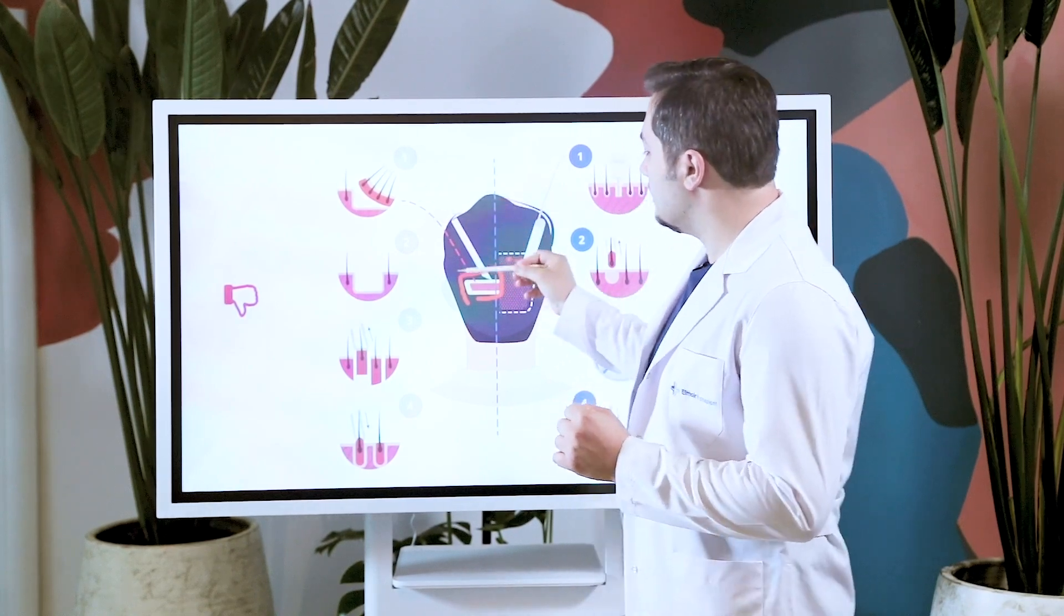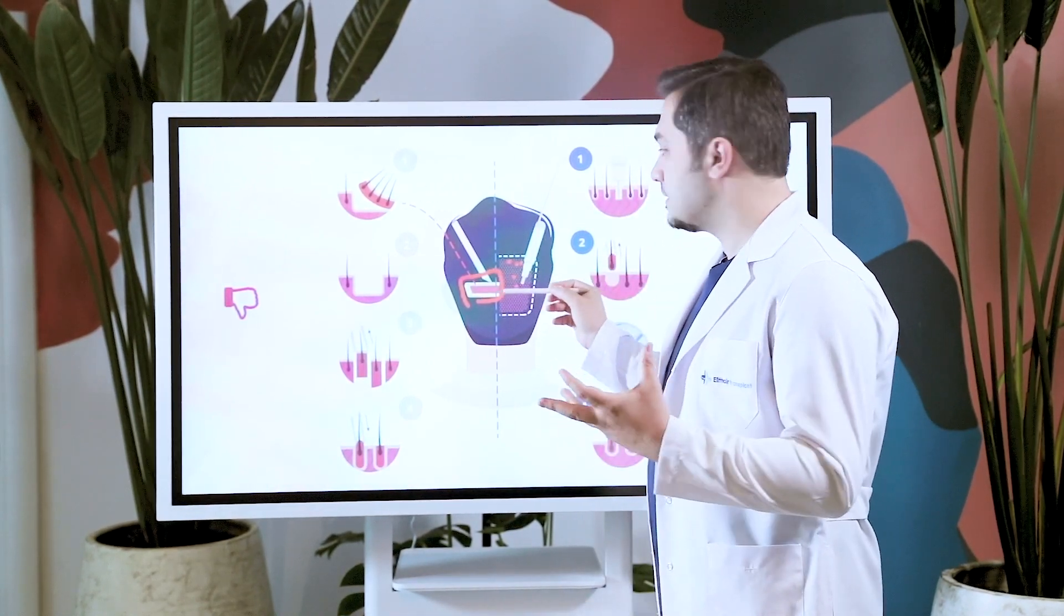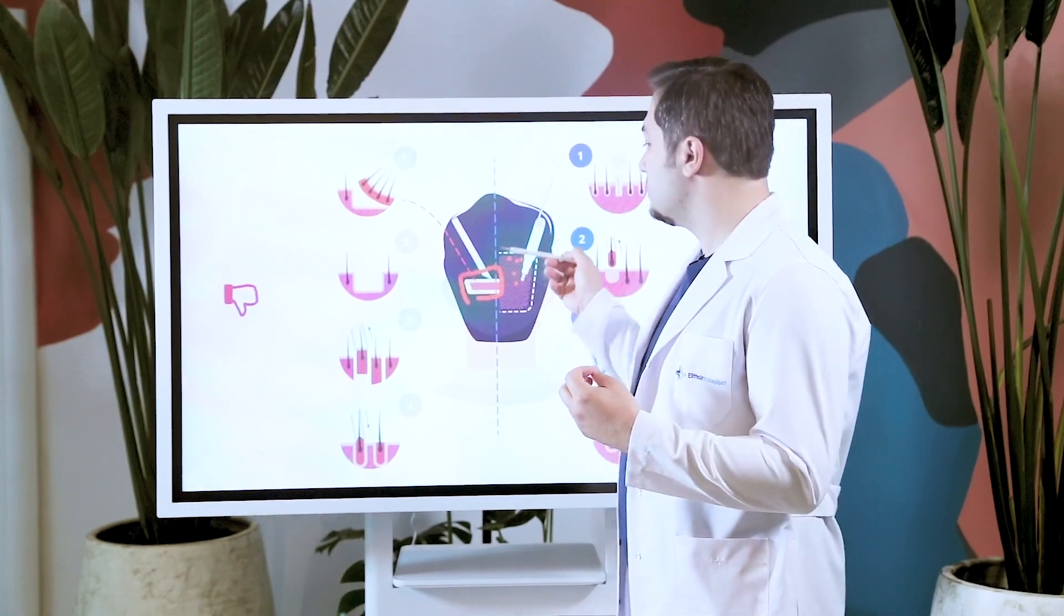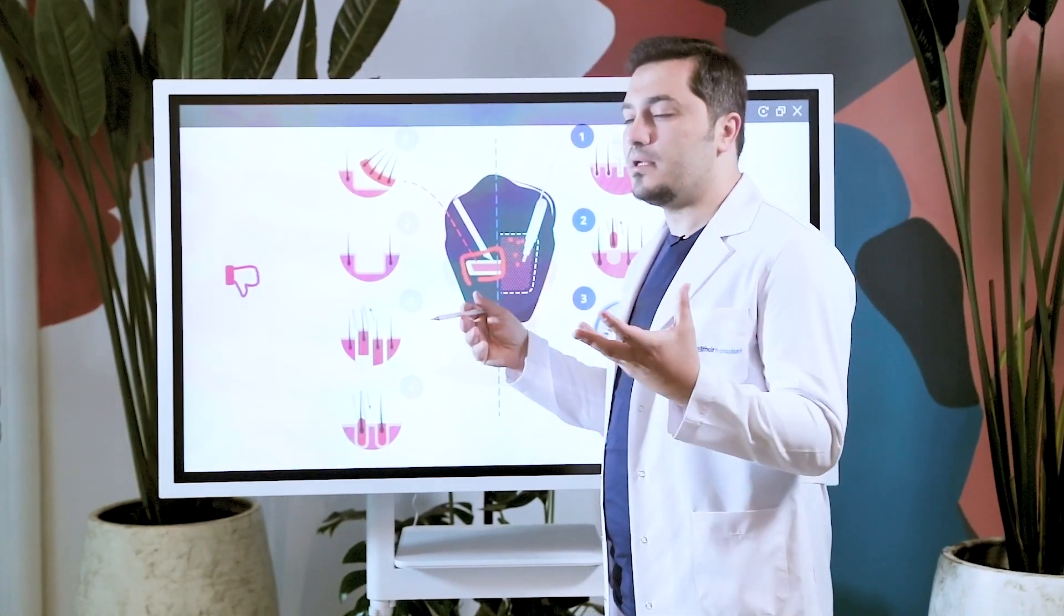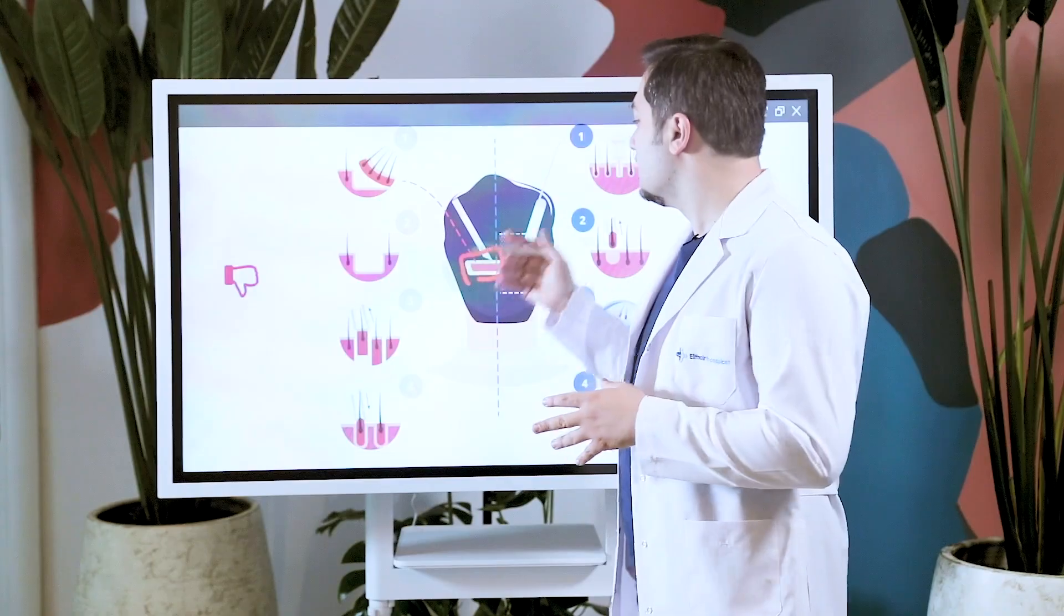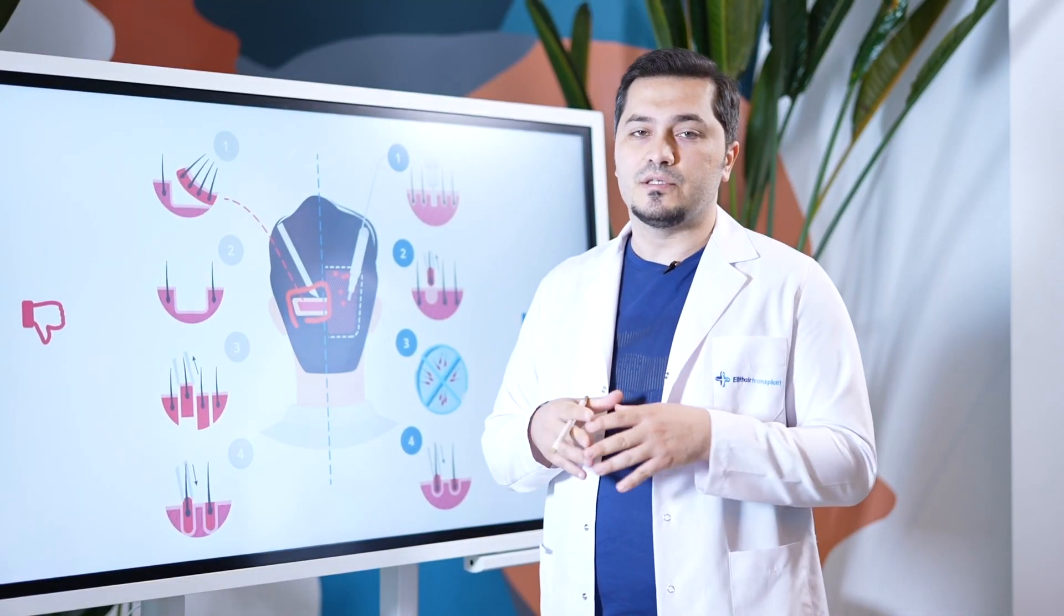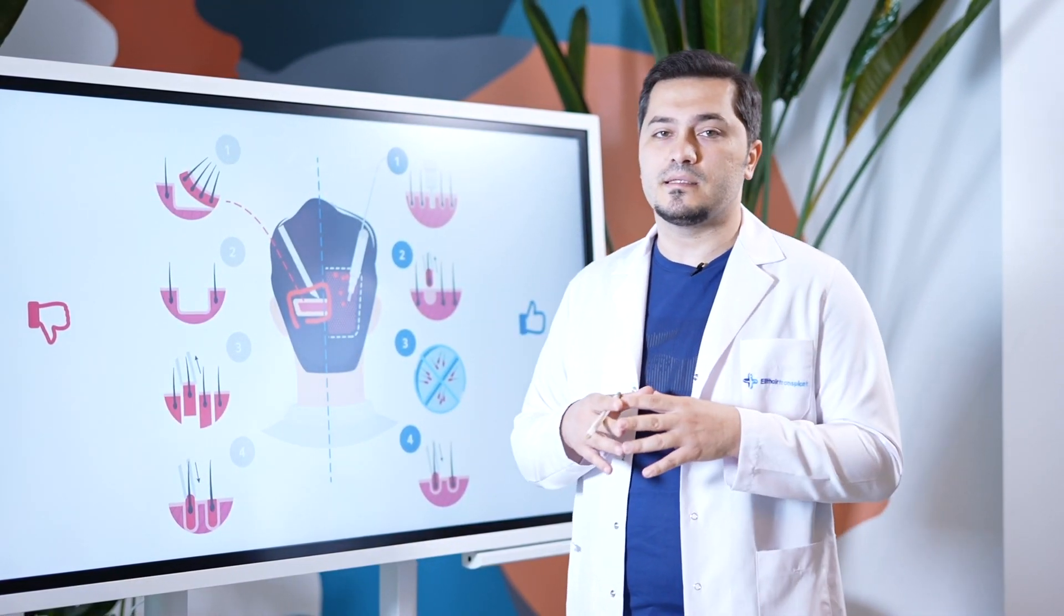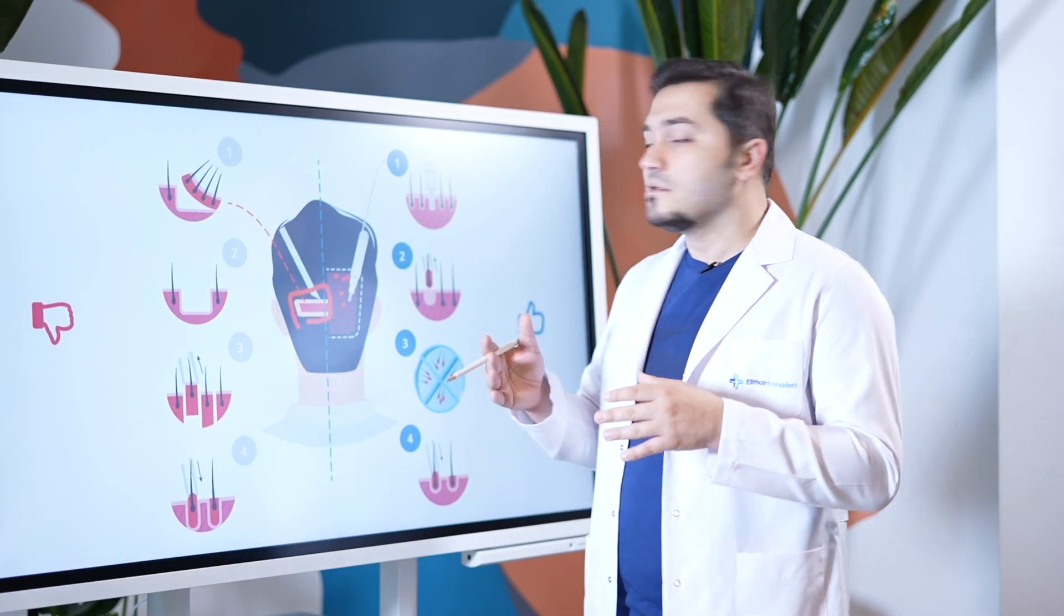With the FUT technique, the patient has to keep their hair surrounding the donor area long to cover the very wide and unsightly scar. The patient with the FUE technique, on the other hand, can keep their hair at zero, one centimeter or two centimeters without the tiny pinpoint scars being visible.